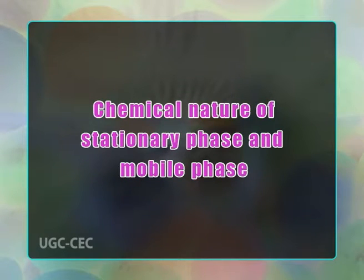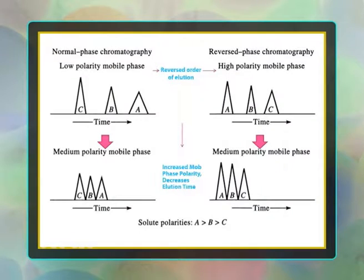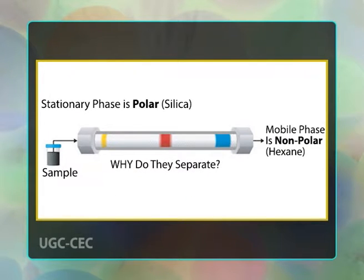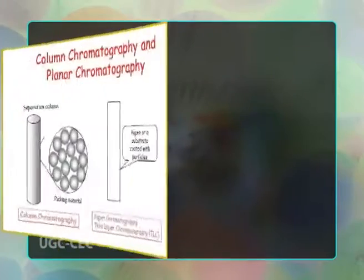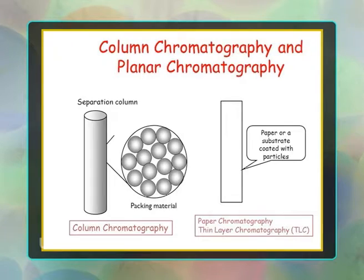In partition chromatography, both stationary and mobile phases are liquid in nature, or liquid as stationary phase and gas as mobile phase. The liquid on the stationary phase exists as a thin layer on a solid background. Based on the chemical nature of stationary and mobile phases, differentiation is based on the nature of stationary phase inside the column: normal phase chromatography and reverse phase chromatography. Based on the shape of the stationary phase, there are two types: column chromatography and planar chromatography.